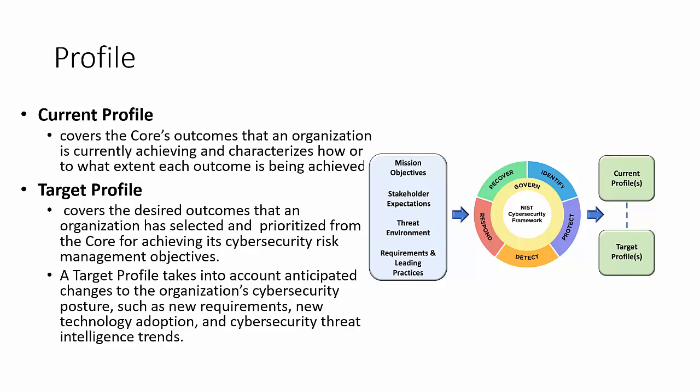A community profile is essentially a shared target profile. Some organizations first create a current profile to review their current efforts and identify areas of improvement. Others prefer to start directly with the target profile to meet a new set of requirements. The process involves understanding the mission, stakeholder expectations, threat environment, and requirements — then using the framework to understand the current profile and work toward achieving the target profile.